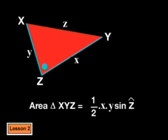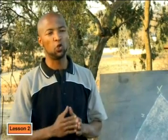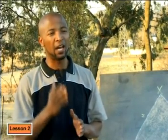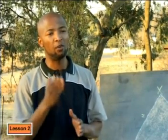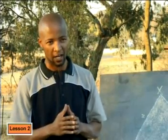For example, here is triangle XYZ. If I know side X, side Y and angle Z, the area rule says that the area of triangle XYZ is equal to half side X multiplied by side Y multiplied by the sine of angle Z. Now that we've shown that the rule is true, we can use it confidently whenever we know the length of two sides and an included angle.